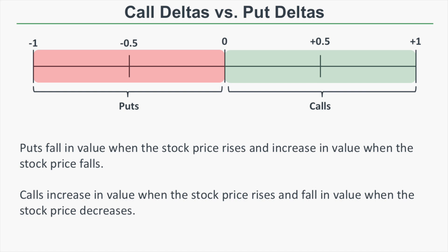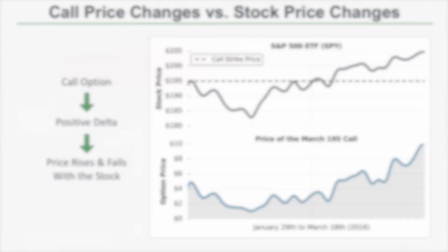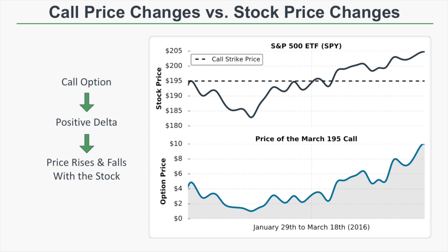Let's talk about the difference between call deltas and put deltas. On a number line between negative 1 and positive 1, put deltas will always be negative, ranging from negative 1 to 0, and call option deltas range from 0 to positive 1. That means puts rise in value when the stock price falls and fall in value when it increases. Calls have positive deltas — they increase when the stock rises and fall when it decreases.